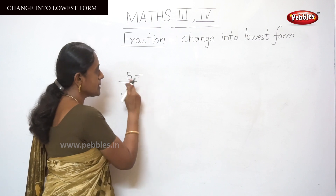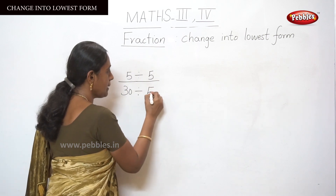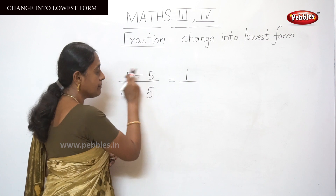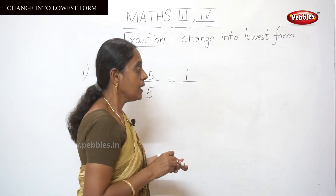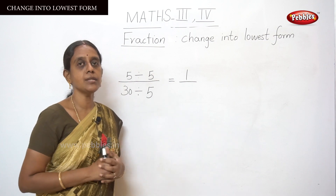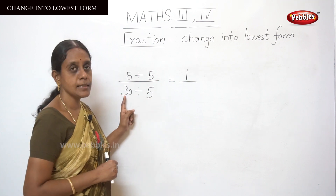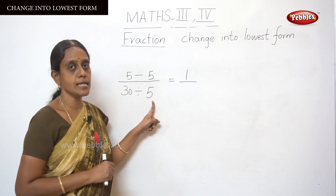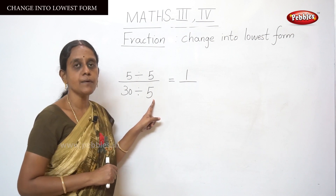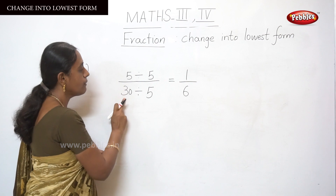Here, divide by 5. The denominator is also divided by the same number — 5 divided by 5 equals 1, and 30 divided by 5: say the 5 times table up to 30 — 1 five is 5, 2 fives are 10, 3 fives are 15, 4 fives are 20, 5 fives are 25, 6 fives are 30 — so put 6 here. The lowest form of 5 by 30 is 1 by 6.